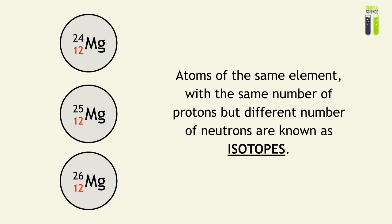And these elements with the same number of protons but a different number of neutrons are known as isotopes of each other.